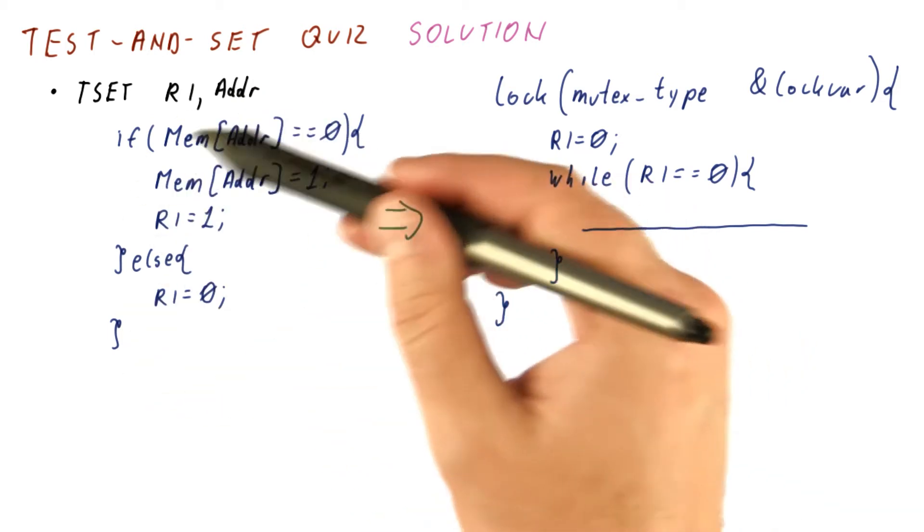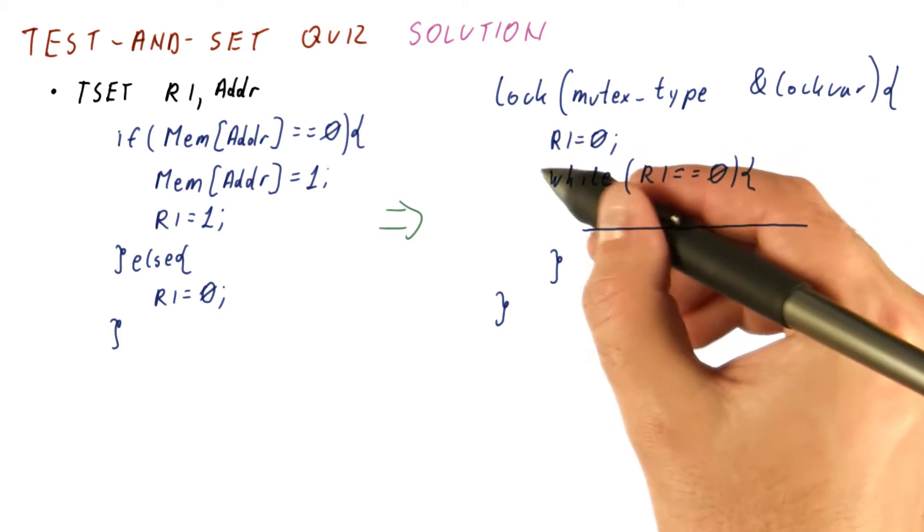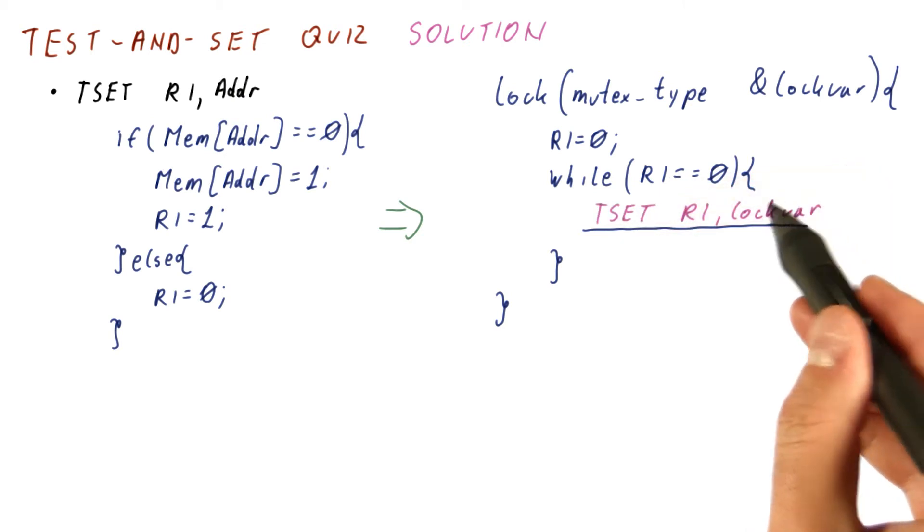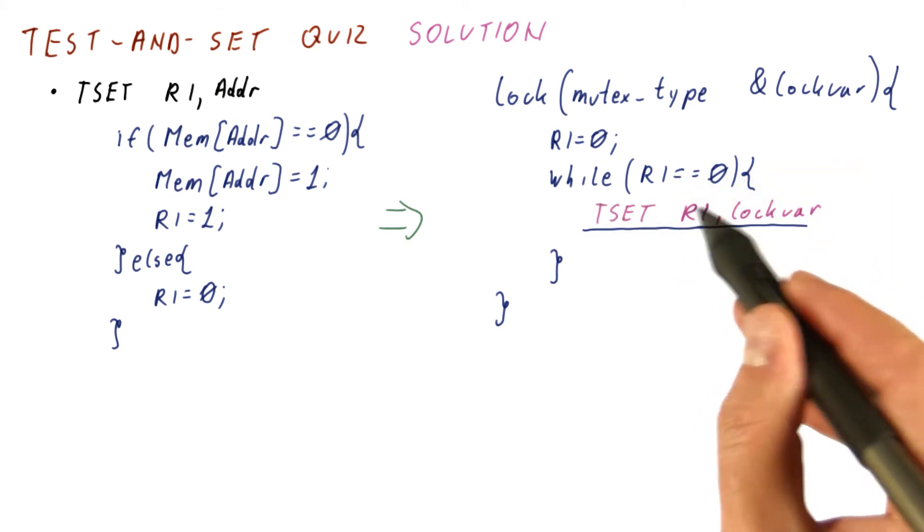And we want to use this to implement a lock function. The way we do that is we set R1 to 0, and then as long as R1 is equal to 0, we test and set lockvar and get the result of that instruction in R1.